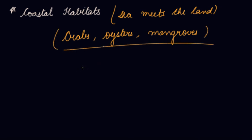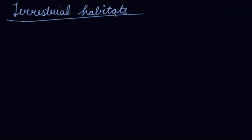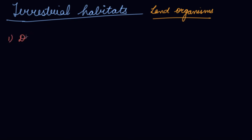Terrestrial habitats are land habitats — organisms that live on land. Examples include cows, human beings, snakes, and camels, all dependent on land for their habitat. We have divided terrestrial habitats into several types. Number one is the desert habitat.